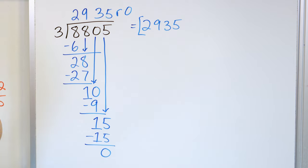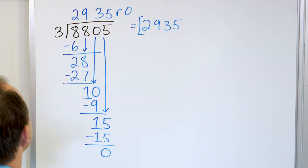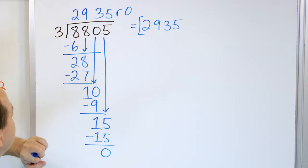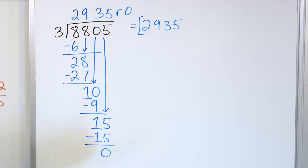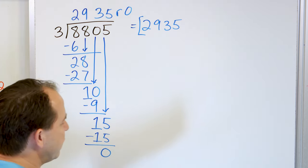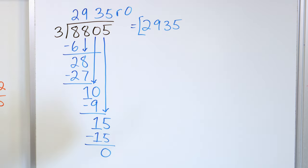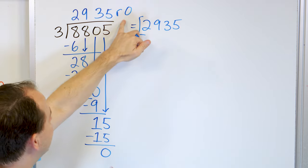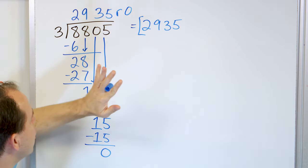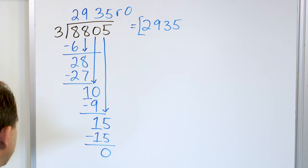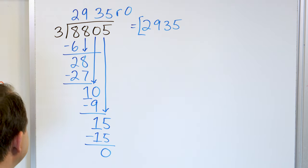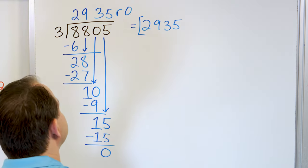The answer is 2,935. So if I take 8,805 bumblebees and put them into three different cages, I'm going to have 2,935 in every cage, perfectly even with no leftovers, no remainders. It goes in exactly an even number of times.